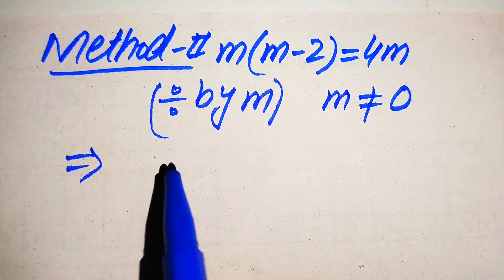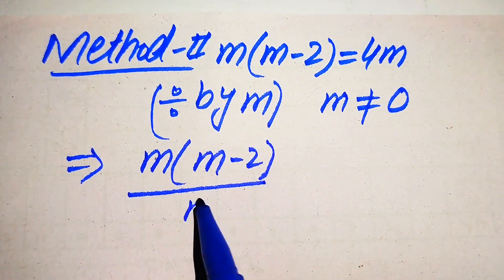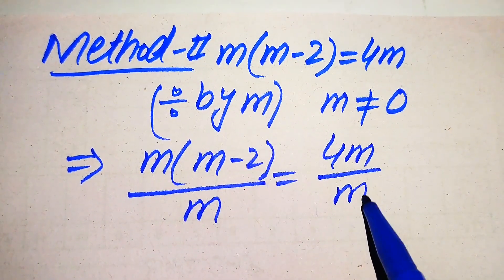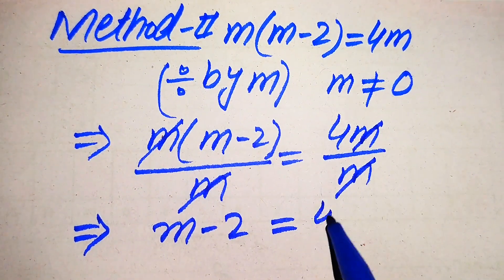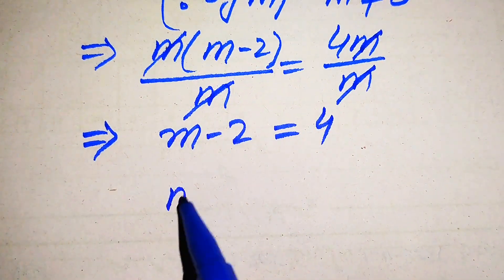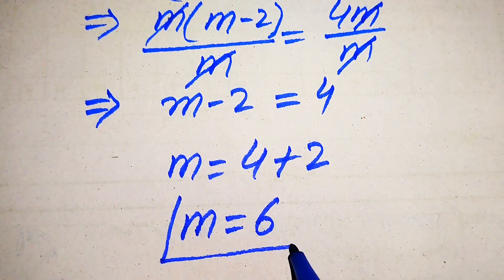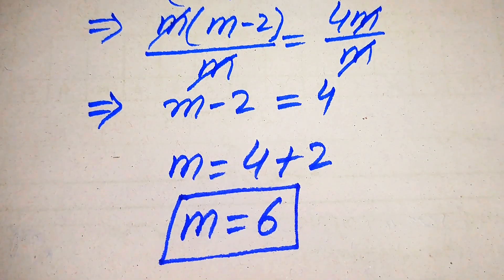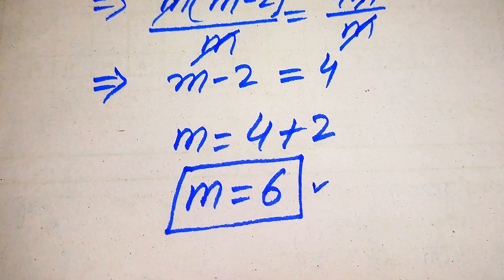When we divide both sides by m, we get m times of m minus 2 divided by m equals to 4m divided by m. The m cancels on both sides, giving us m minus 2 equals to 4. Moving minus 2 to the right hand side gives m equals to 6. So in the second method we get only one root, m equals 6, which is the solution. Thank you so much for watching — please subscribe to my channel for more exciting videos.